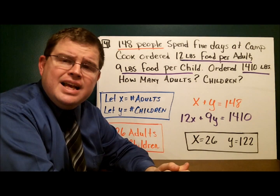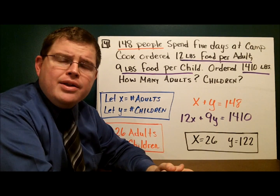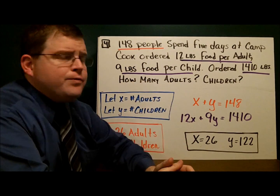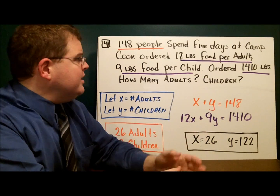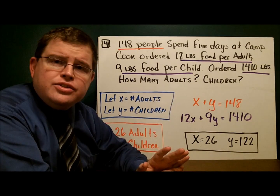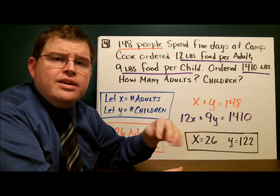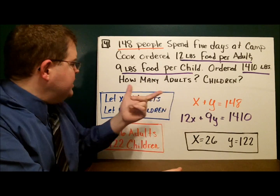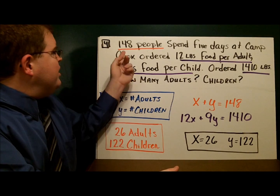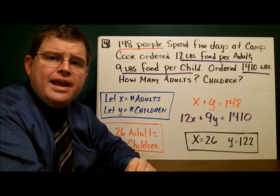In this example, 148 people are going off to summer camp. The cook ordered 12 pounds of food for every adult and 9 pounds of food for every child over the course of 5 days. He ordered 1,410 pounds of food total. We want to find how many adults and how many children went on this trip. Let x represent the number of adults and y represent the number of children. There are 148 people total, so x plus y equals 148.